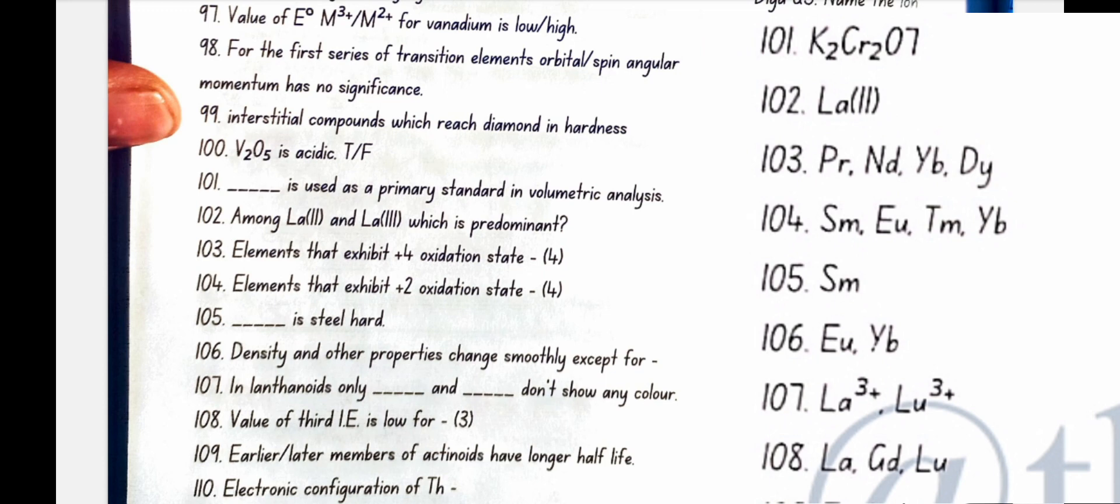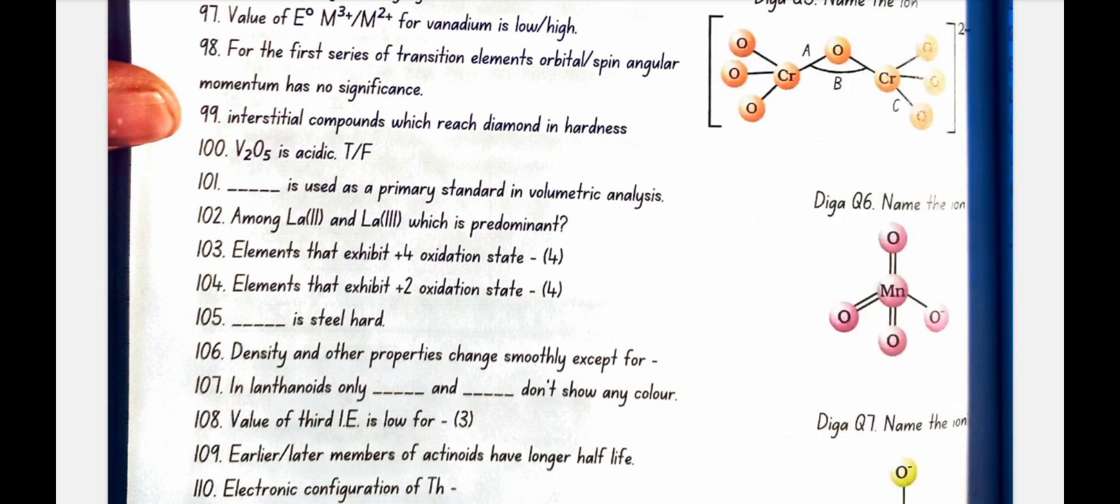K2Cr2O7 is used as a primary standard in volumetric analysis. Among La2 and La3 which is predominant? La3. Elements that exhibit plus 4 oxidation state: Pr Nd Tb Dy. Elements that exhibit plus 2 oxidation state: Sm Eu Tm Yb.